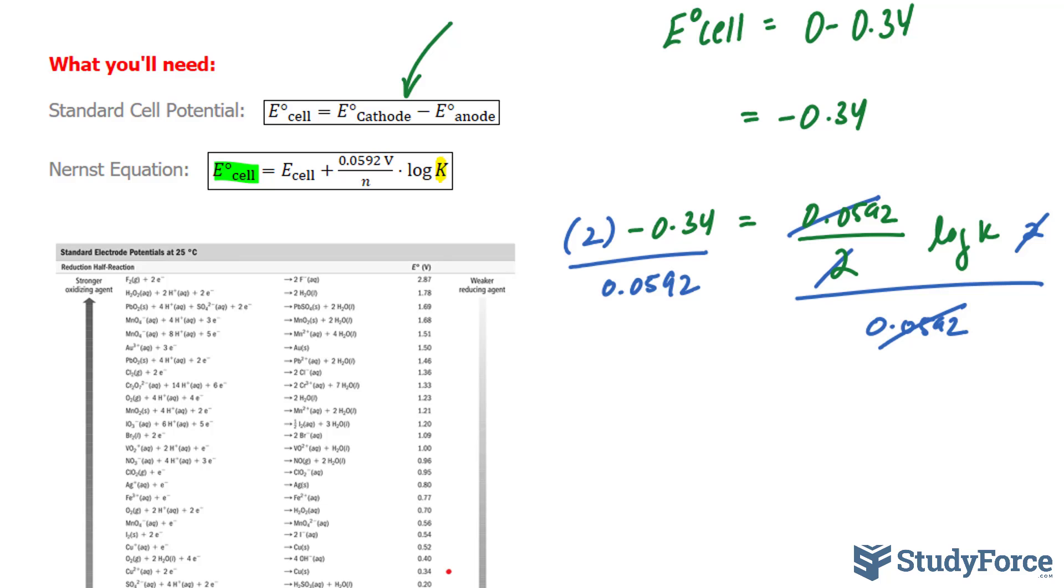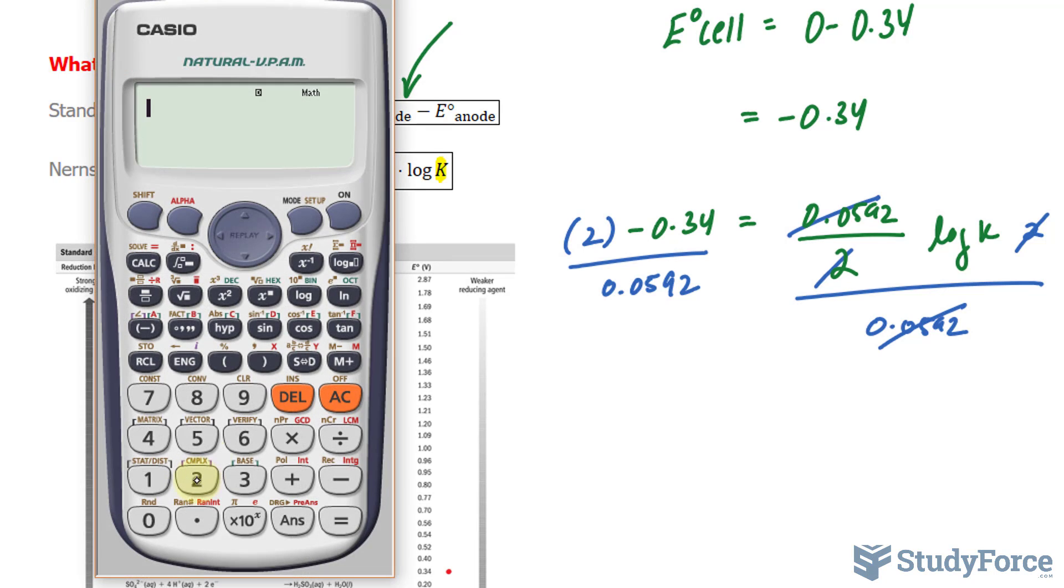And here's what we're left with, we're left with that on the left side. I'm going to calculate it. 2 times negative 0.34 divided by 0.0592,